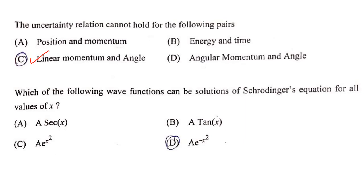The next question is: which of the following wave functions can be solutions of Schrödinger's equation for all values of x? We know that A·e^(−x²) is the form of the wave function for a linear harmonic oscillator. Therefore, option D is the answer.